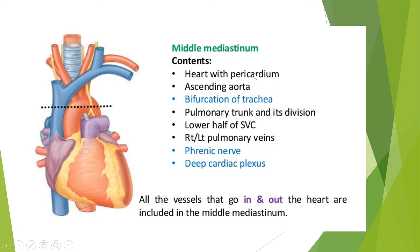To summarize the contents of the middle mediastinum: heart, pericardium, lower half of the superior vena cava, ascending aorta, bifurcation of the trachea, pulmonary trunk and its divisions into right and left pulmonary arteries, four pulmonary veins (two right, two left), phrenic nerve, vagus nerve forming the deep cardiac plexus, and all vessels going in and out of the heart.